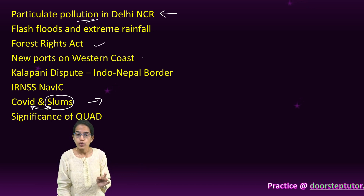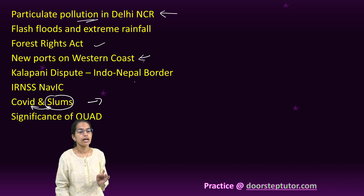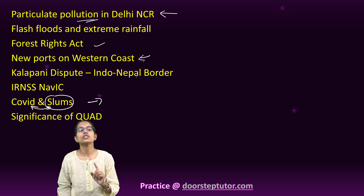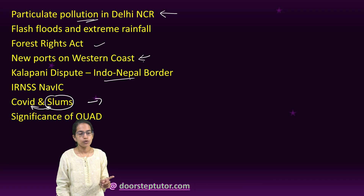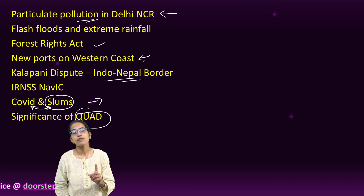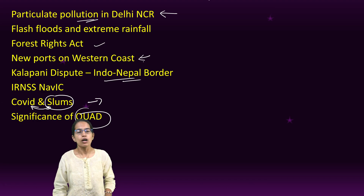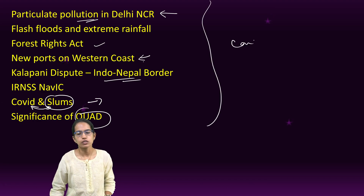There were questions related to forest rights, new airports on the western coast of India, water disputes, the Kalapani dispute on the Indo-Nepal border, and the significance of the QUAD summit in the Indo-Pacific area.